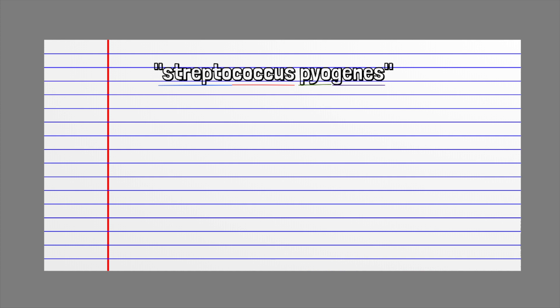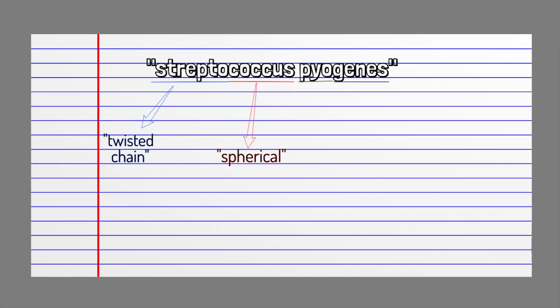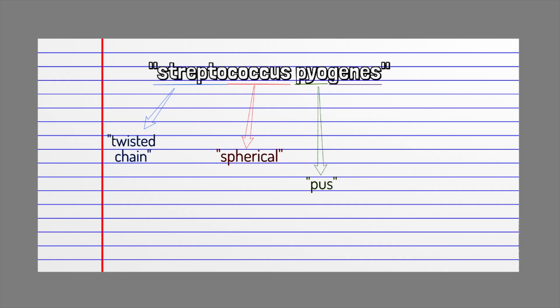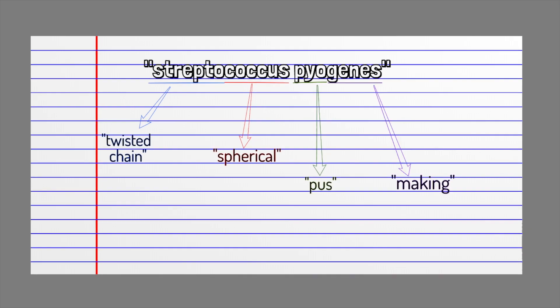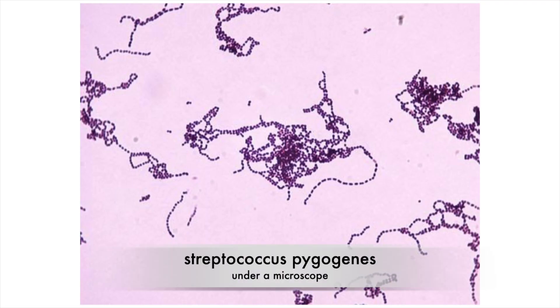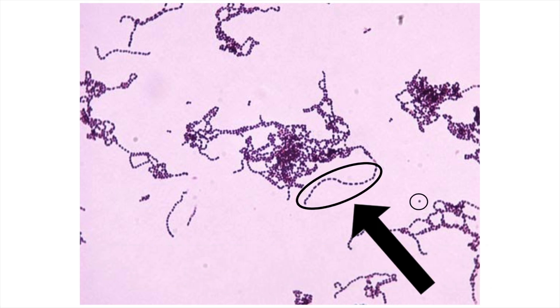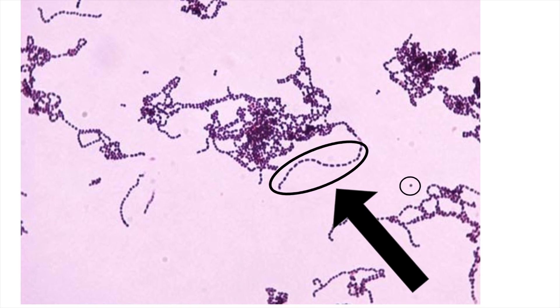Here's another fun fact. Using our knowledge of Greek and Latin, we can figure out what streptococcus means. Strepto means twisted chain, and coccus means spherical. Pyogenes comes from the Greek root pyo, meaning pus, and genes meaning making. So streptococcus means spherical pus-producing bacteria in a twisted chain. Here's what the bacteria look like under a microscope — each cell is one of those tiny purple dots, and the clusters of purple are chains of the bacteria.